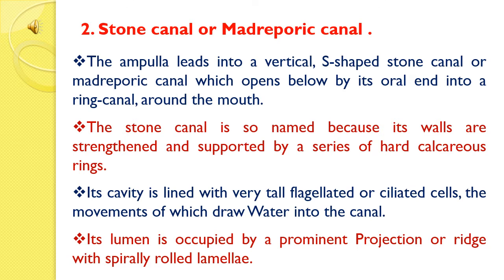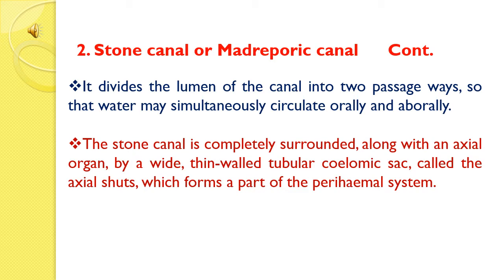Its cavity is lined with very tall flagellated or ciliated cells, the movement of which draws water into the canal. Its lumen is occupied by a prominent projection, a ridge with spirally rolled lamellae. It divides the lumen of the canal into two passage ways so that water may simultaneously circulate orally and aborally. The stone canal is completely surrounded along with an axial organ by a wide thin-walled tubular coelomic sac called the axial shaft, which forms a part of the perihemal system.